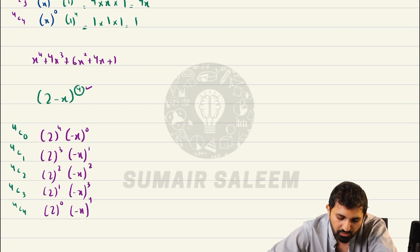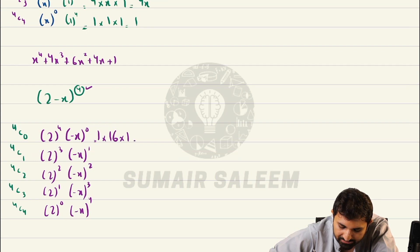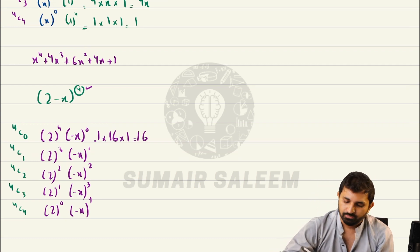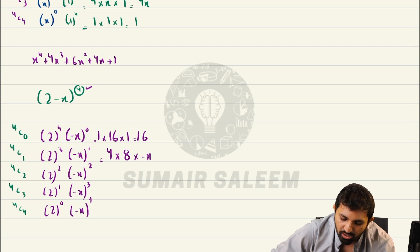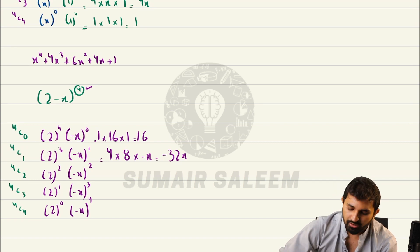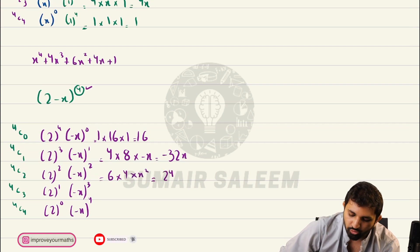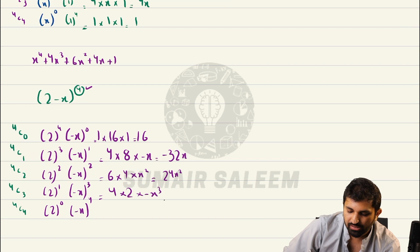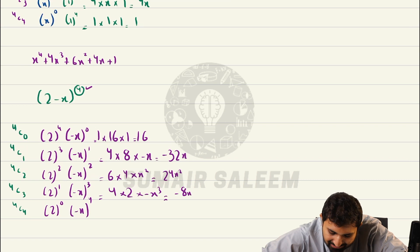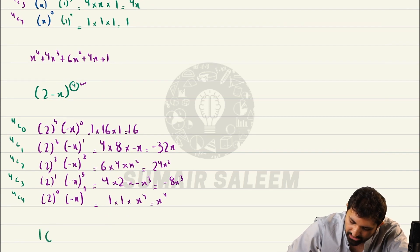4C0 is 1, into 2 to the power 4 which is 16, into 1, that makes 16. 4C1 is 4, into 2 cubed which is 8, into minus x, that makes minus 32x. 4C2 is 6, into 4, into x squared, that makes 24x squared. 4C3 is 4, into 2, into minus x cubed, so that is minus 8x cubed. 4C4 is 1 into 1 into x to the power 4, so that's x to the power 4.